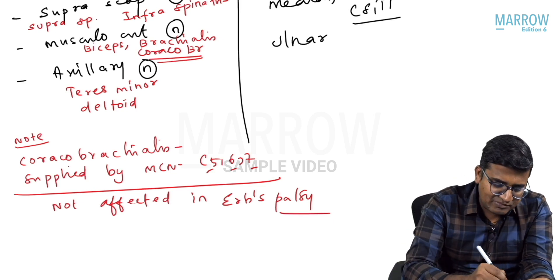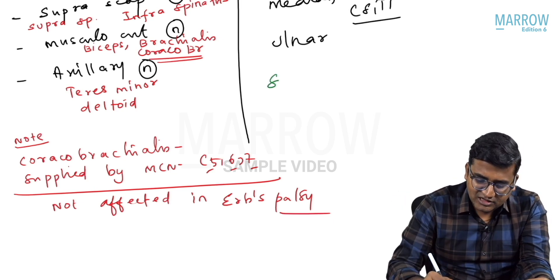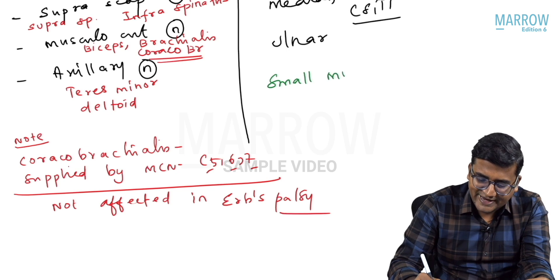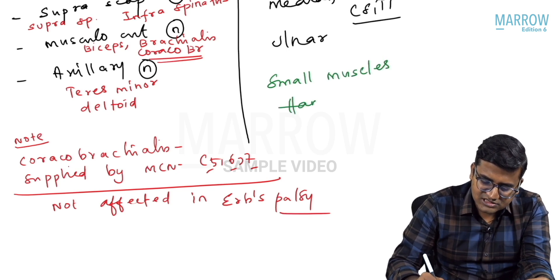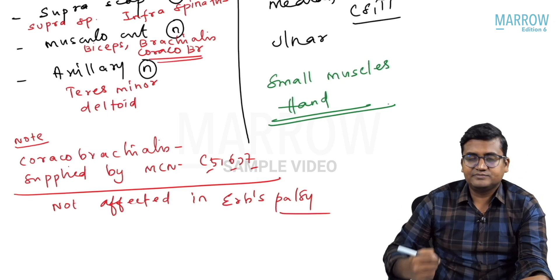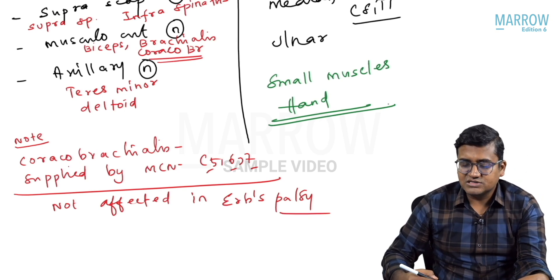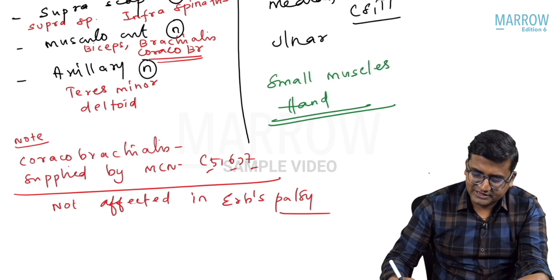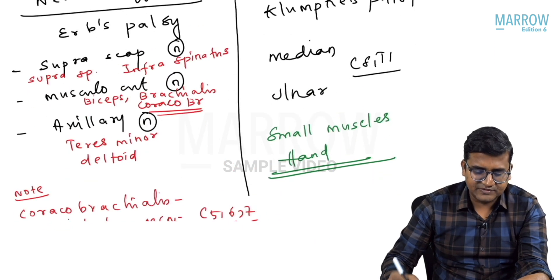The muscles affected in Klumpke's palsy are the small muscles of the hand.